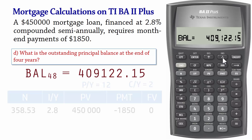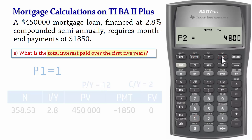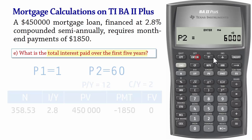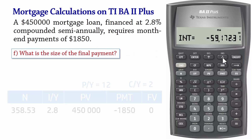To find the total interest paid in the first 5 years, we set P1 to 1, scroll down and set P2 to 5 times 12, which equals 60, Enter. Then scroll down to interest and we have $59,172.31.